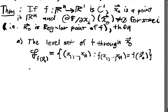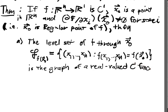So this is the graph of a real valued, all the values are real numbers, C¹ function, right we're just extending our notion of being the graph of a curve so now we have a C¹ function of n-1 variables